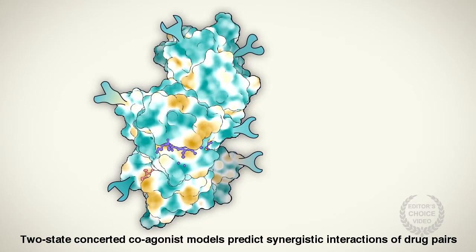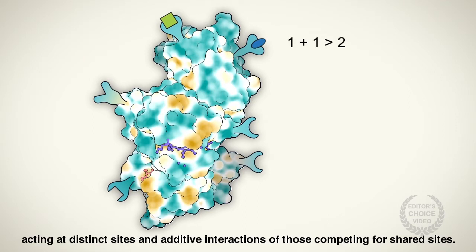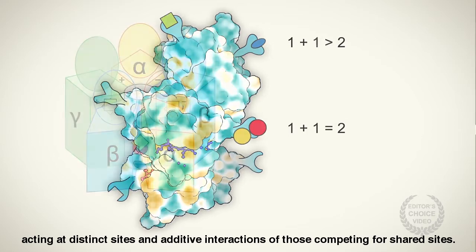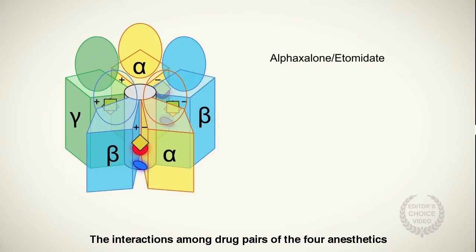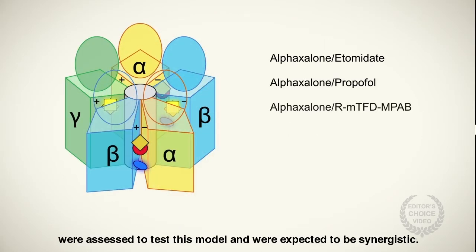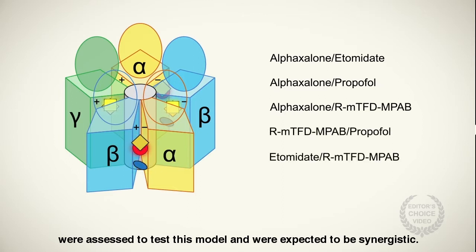Two-state concerted coagonist models predict synergistic interactions of drug pairs acting at distinct sites and additive interactions of those competing for shared sites. The interactions among drug pairs of the four anesthetics were assessed to test this model and were expected to be synergistic.